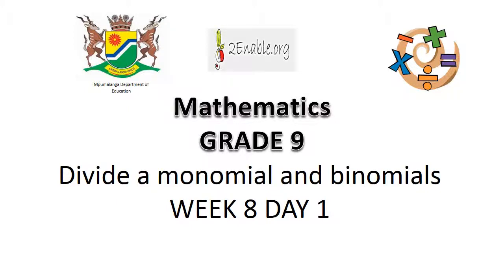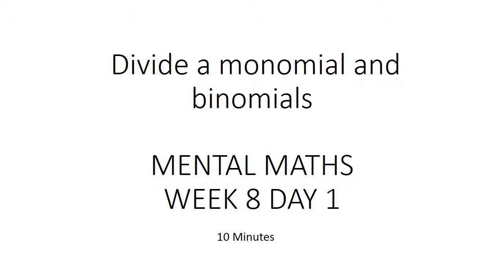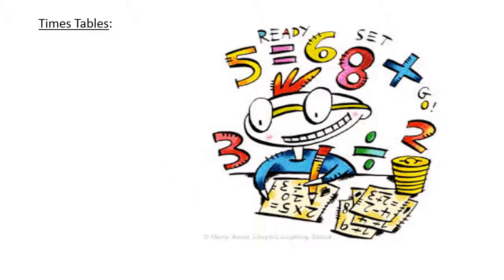Divide a monomial and binomials — mental maps. Times tables: 12 times 4 equals 48; 11 times 7 equals 77.